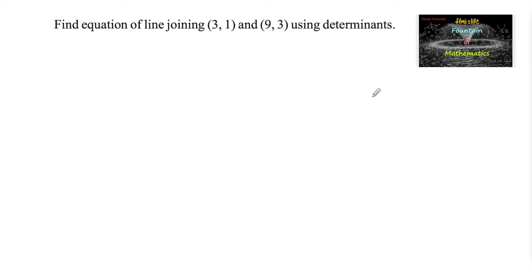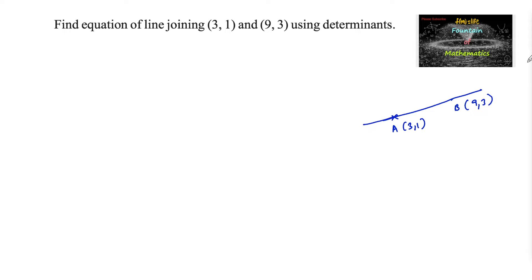Find the equation of the line joining (3,1) and (9,3) using determinants. Let us consider point A(3,1) and point B(9,3). To find the equation of the line passing through these two points, let us consider another general point P(x, y) on the line such that the points P, A, B are collinear.